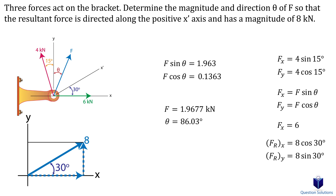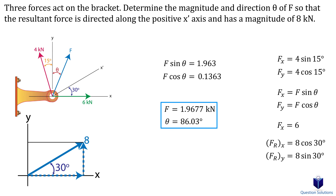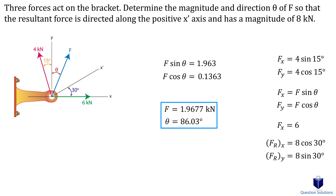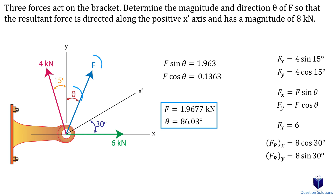Solving those two equations gives us our answer. Remember, in this problem we didn't find the resultant — we found force F so that the resultant force would have a magnitude of 8 kilonewtons and be directed along the x-prime axis. That should cover the types of problems you will face in this chapter. In the next video we will cover how to break forces in three dimensions. Thanks for watching and best of luck with your studies.